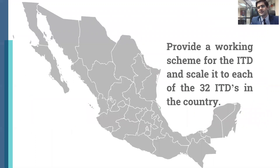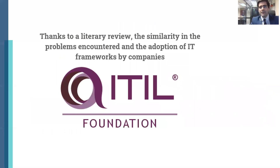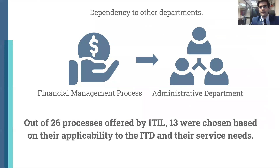The objective is to provide a working scheme for the ITD and scale it to each of the 32 states of the country, as the ITSM framework would be similar to the one developed. Many enterprises have adopted the Information Technology Infrastructure Library as an ITSM framework for delivering and managing IT services. There are several similar studies available in literature noticing that in all of them, the ITIL framework becomes an effective ITSM solution. That's why it was decided to carry out an adaptation according to the ITD needs. The ITD works under internal regulation, so some of the department activities depend on other departments as well. Due to this reason, out of 26 processes offered by ITIL, 13 were chosen based on their applicability to the ITD and their service management needs.